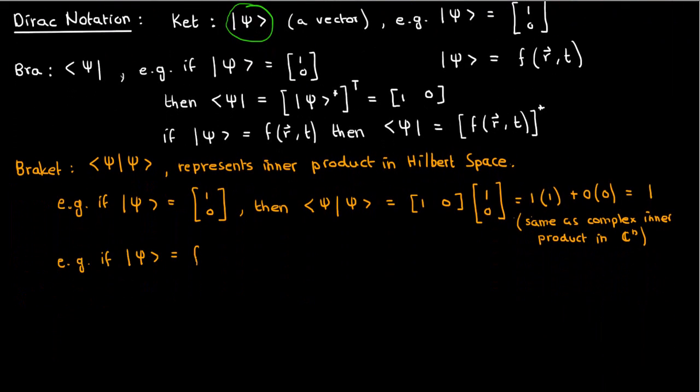If psi is a function, then the bracket notation tells us that the inner product of psi with itself is just the complex conjugate of f times f.